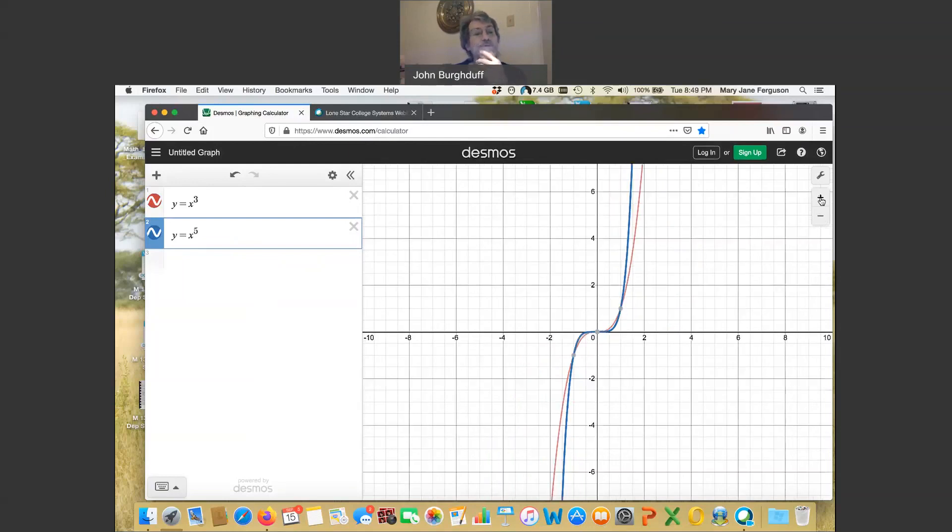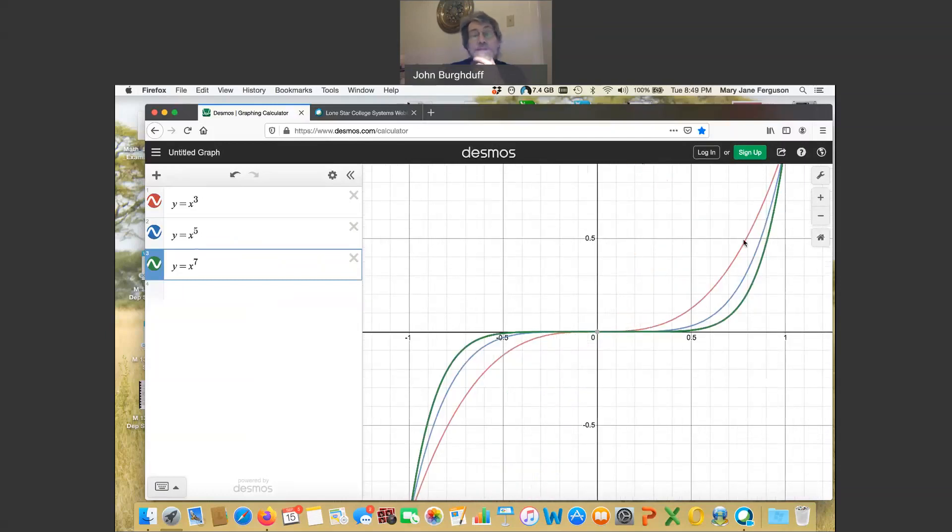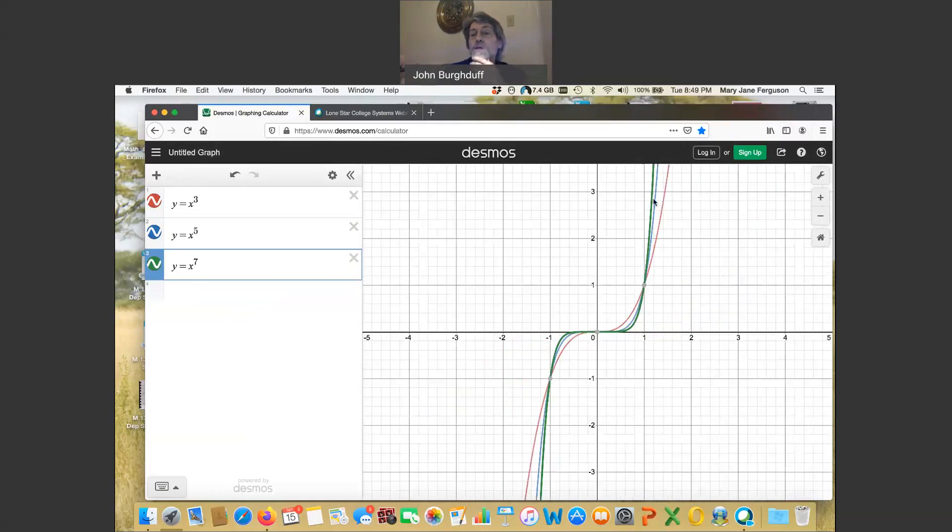What would happen if we changed that to y equal x to the seventh? Even more so. Let's zoom in a little bit more. So you can see it between negative 1 and 1. Notice that as the exponent goes up, the graph gets flatter and flatter closer to the origin.